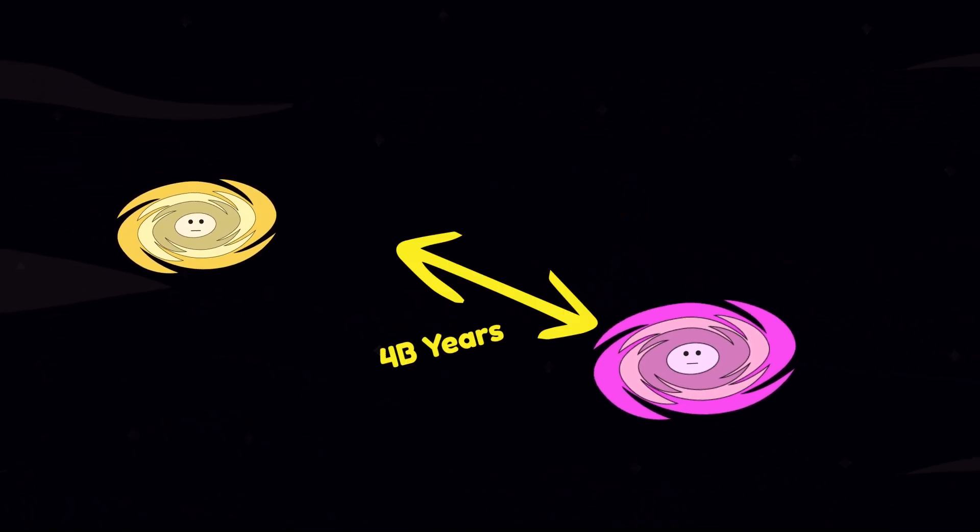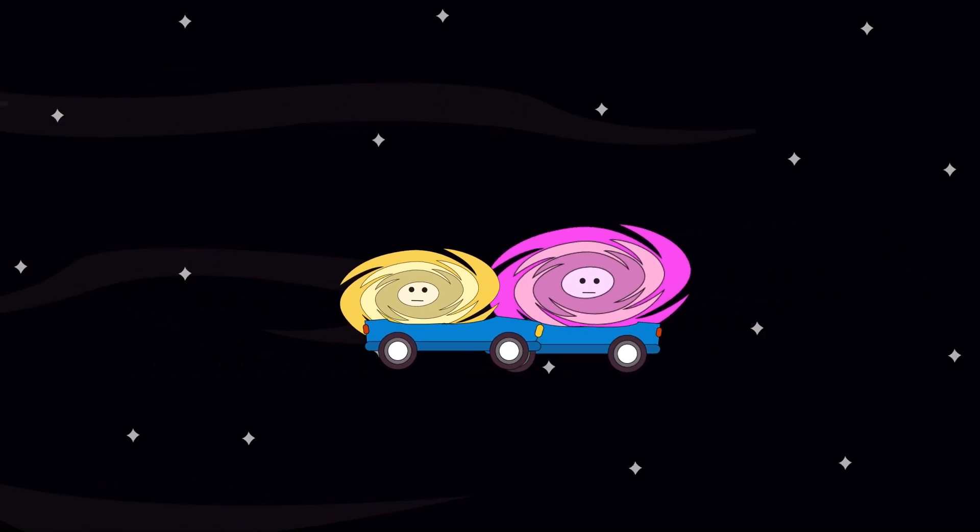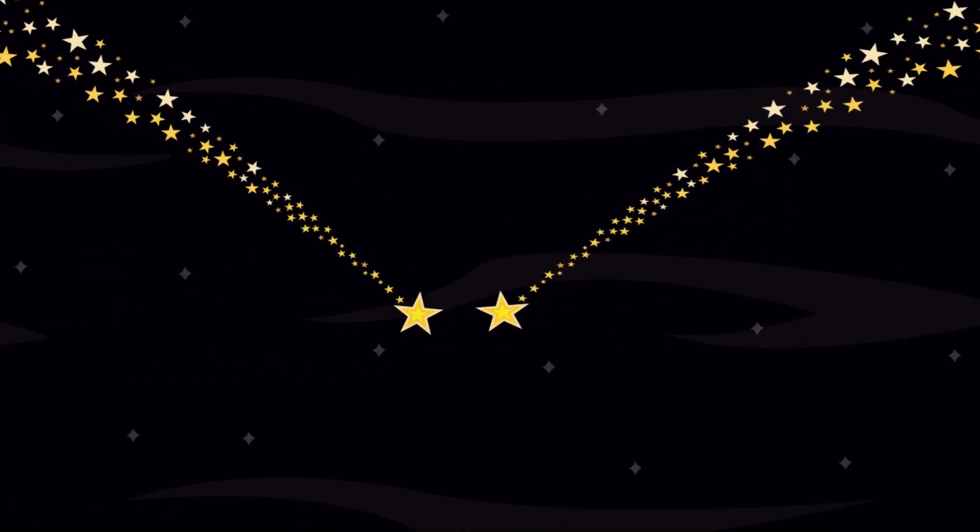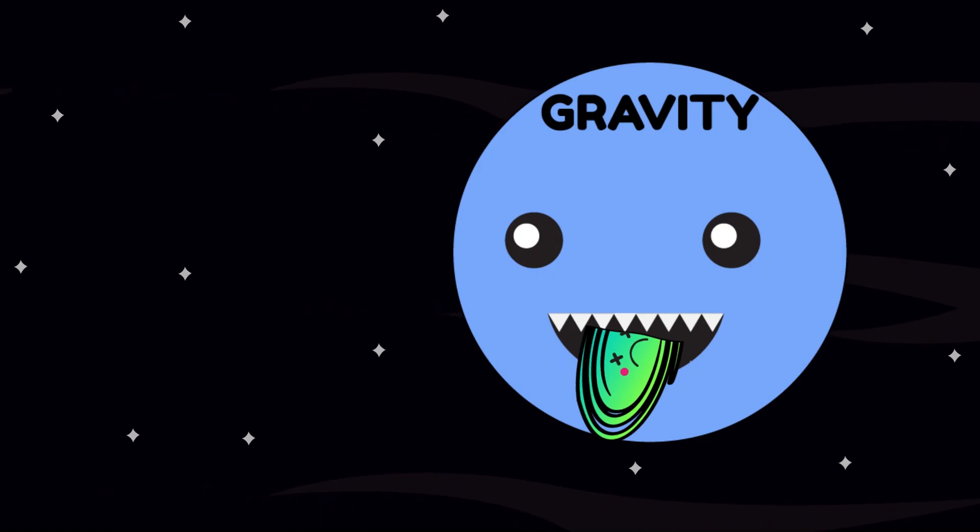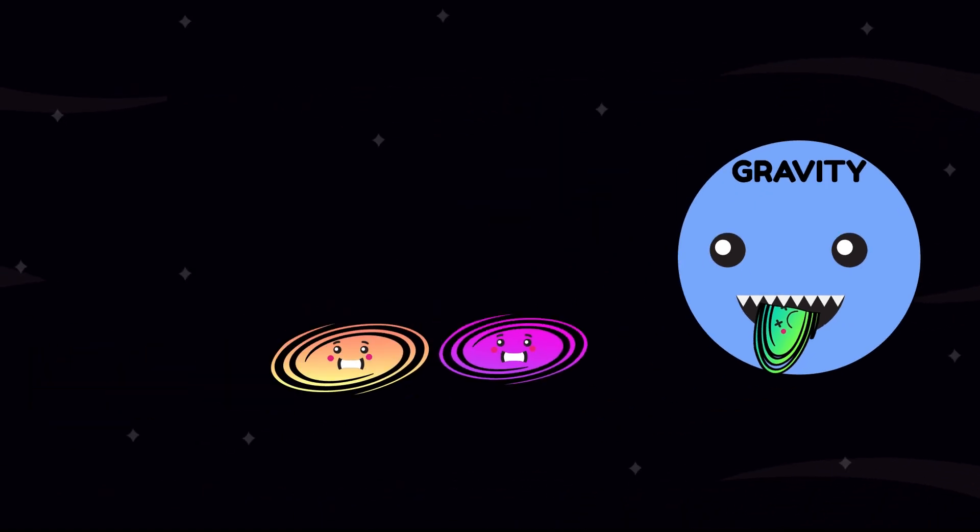In 4 billion years, you'll collide. A galactic car crash in slow motion. Billions of stars flung around like glitter at a funeral. Tiny dwarf galaxies orbit nearby like nosy cousins. Some already half-eaten by gravity, others waiting their turn.